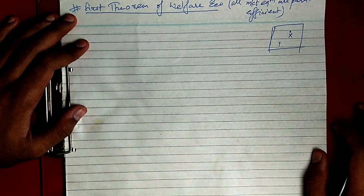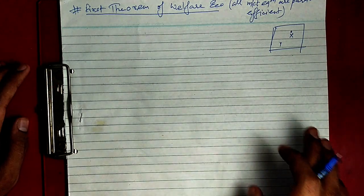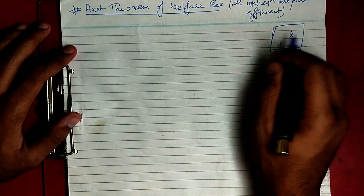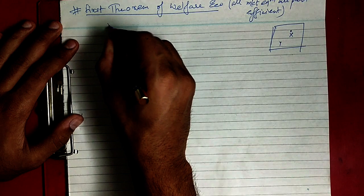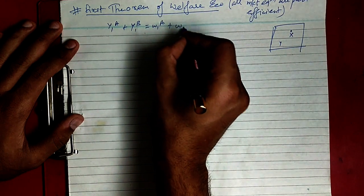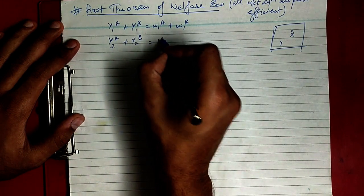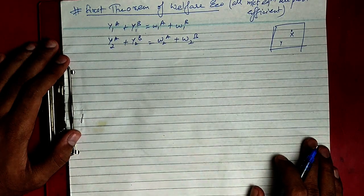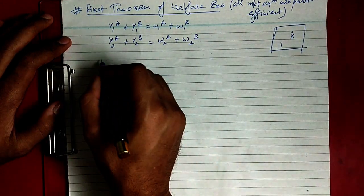We have assumed y is a market equilibrium and it is not Pareto efficient. The feasibility conditions are: y1a + y1b = w1a + w1b for good 1, and y2a + y2b = w2a + w2b for good 2. There is some x allocation, y is preferred over x, and x is Pareto efficient.